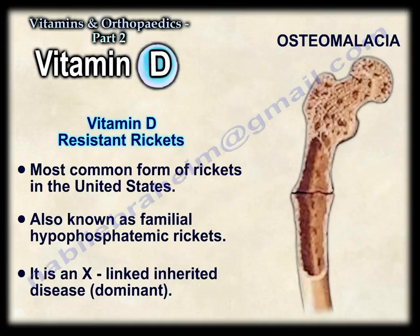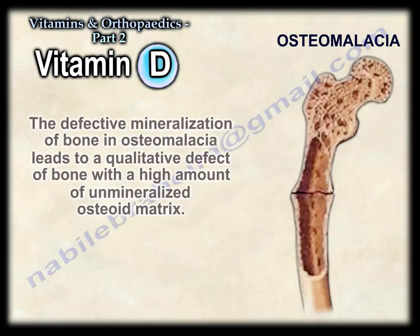Vitamin D resistant rickets is the most common form of rickets in the United States. It is also known as familial hypophosphatemic rickets, and is an X-linked inherited disease. In osteomalacia, the defective mineralization of bone leads to a qualitative defect of bone, with a high amount of unmineralized osteoid matrix.